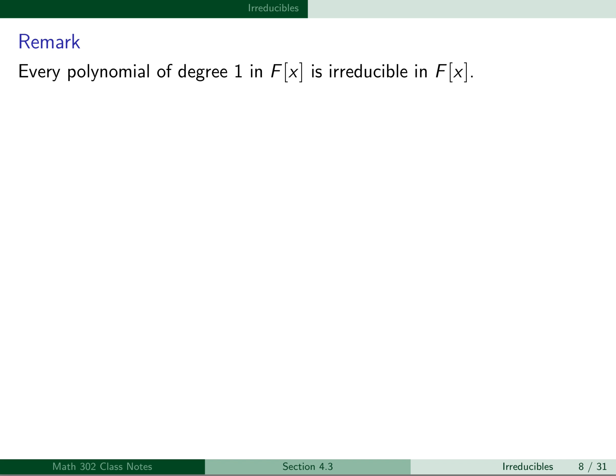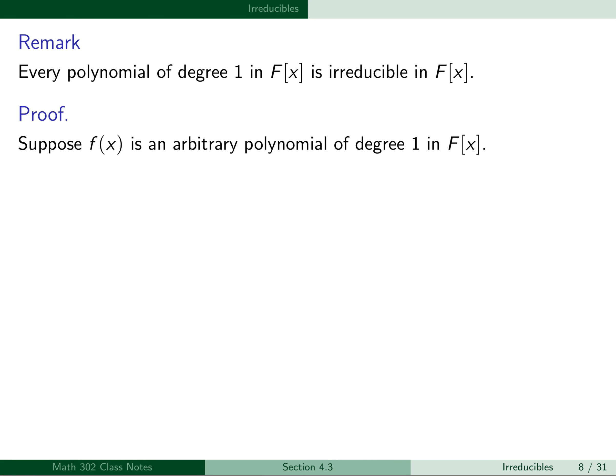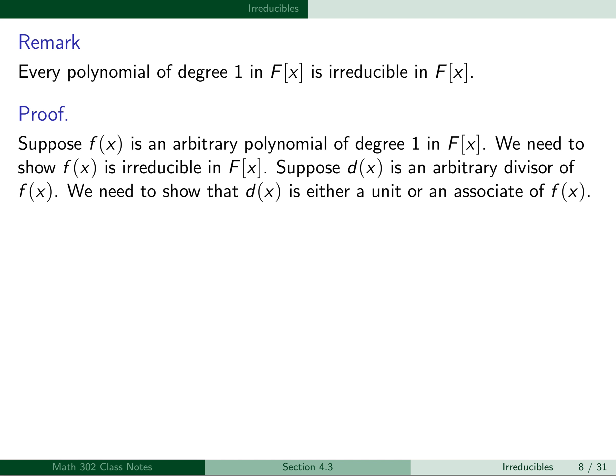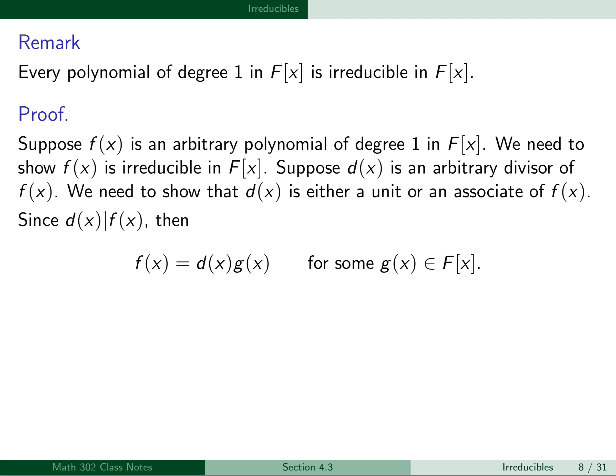Every polynomial of degree 1 in F[x] is irreducible in F[x]. To prove this, suppose f(x) is an arbitrary polynomial of degree 1 in F[x]. We need to show that f(x) is irreducible. Using the definition, suppose d(x) is an arbitrary divisor of f(x). We then need to show that d(x) is either a unit or an associate of f(x). Since d(x) divides f(x), then f(x) equals d(x) times g(x) for some polynomial g(x) in F[x].